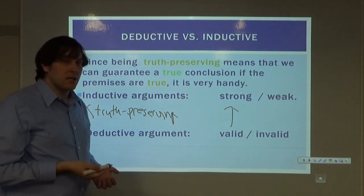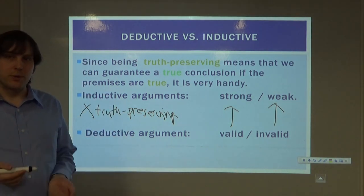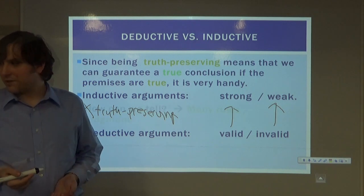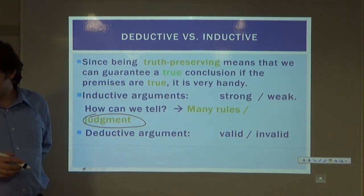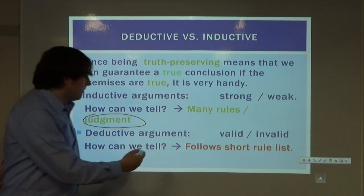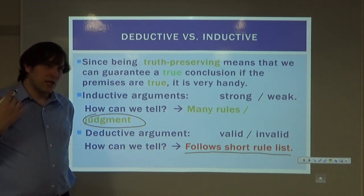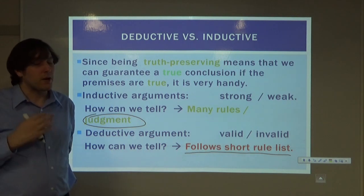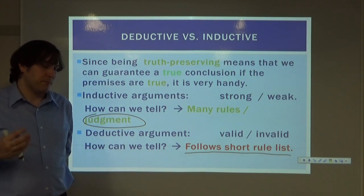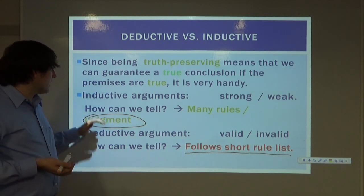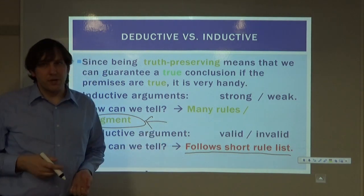These arguments also tend to depend on our senses and on data. Inductive arguments are not truth-preserving. There aren't clear rules in quite the same way as deductive arguments. Strong means the likelihood is high that our argument supports the conclusion. Weak means the likelihood is low, or there are reasons to doubt whether our argument proves the conclusion. Inductive arguments have many rules and involve our judgment. Deductive arguments follow a short rule list — only about 15 to 20 rules at most — whereas for inductive arguments there are an infinite number of possible rules and variations.